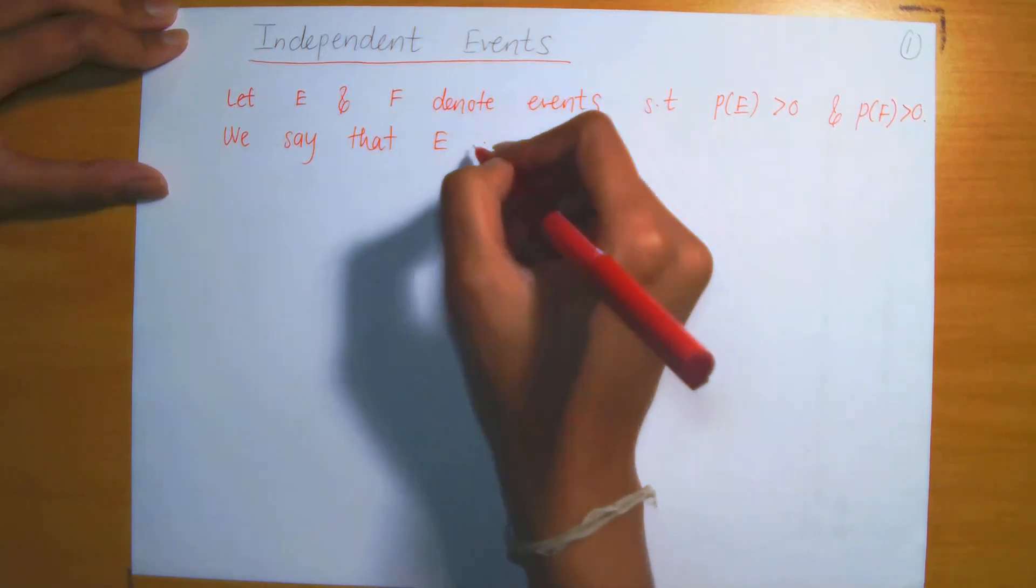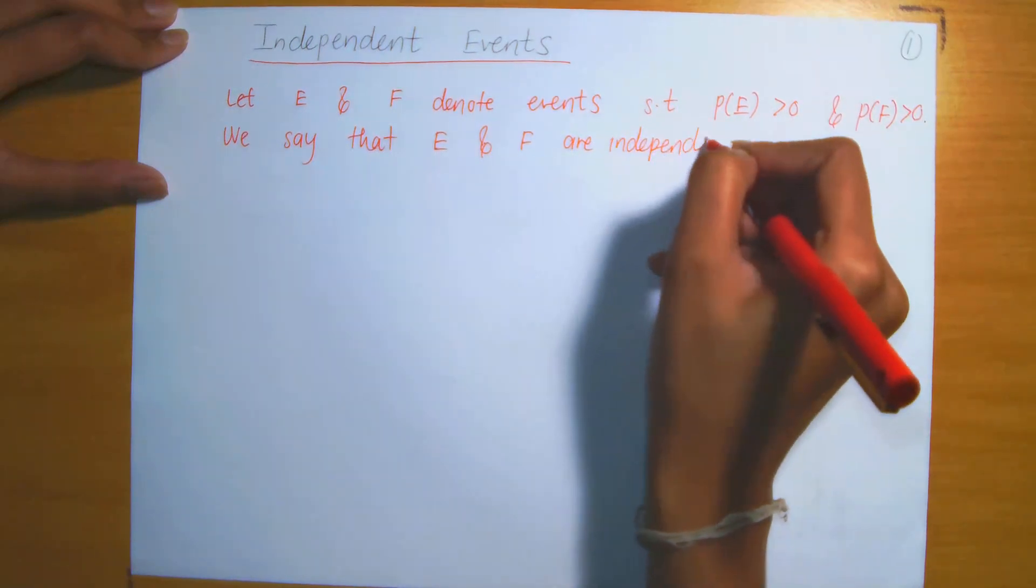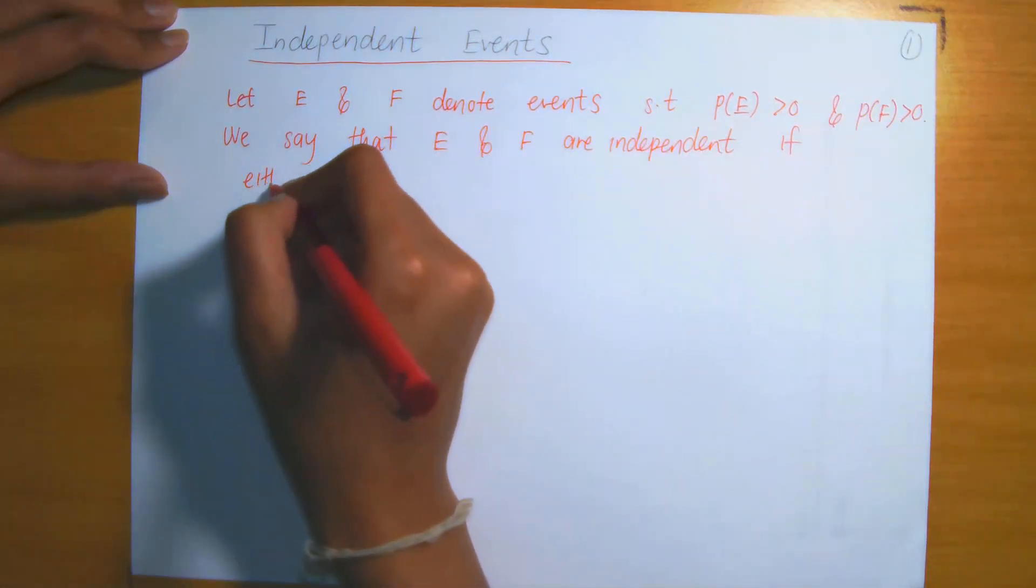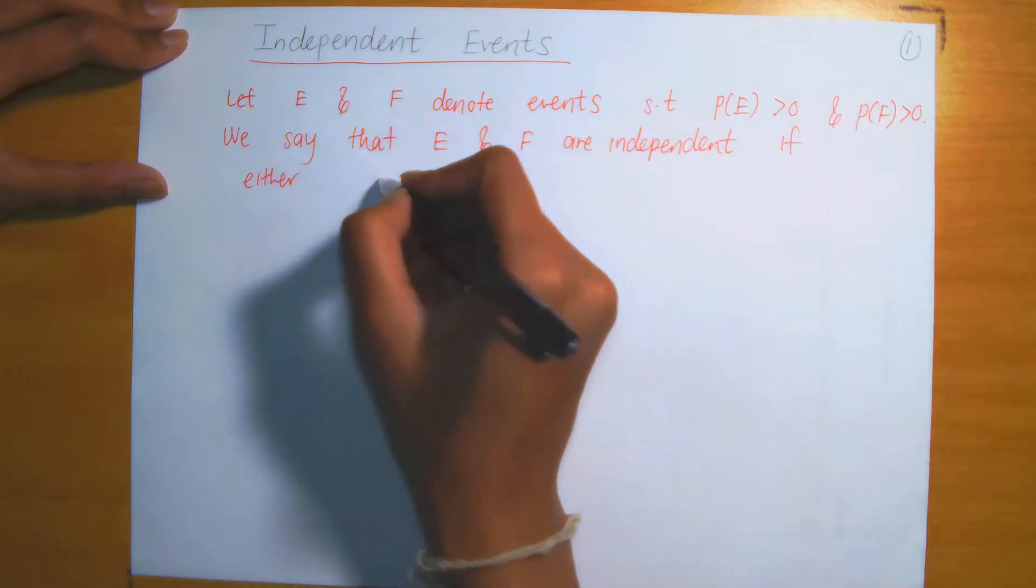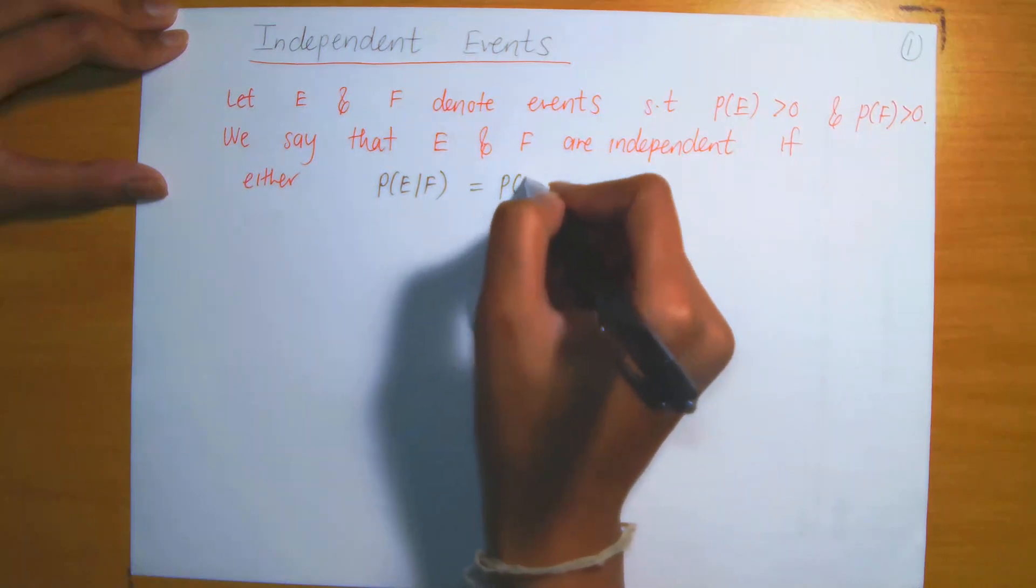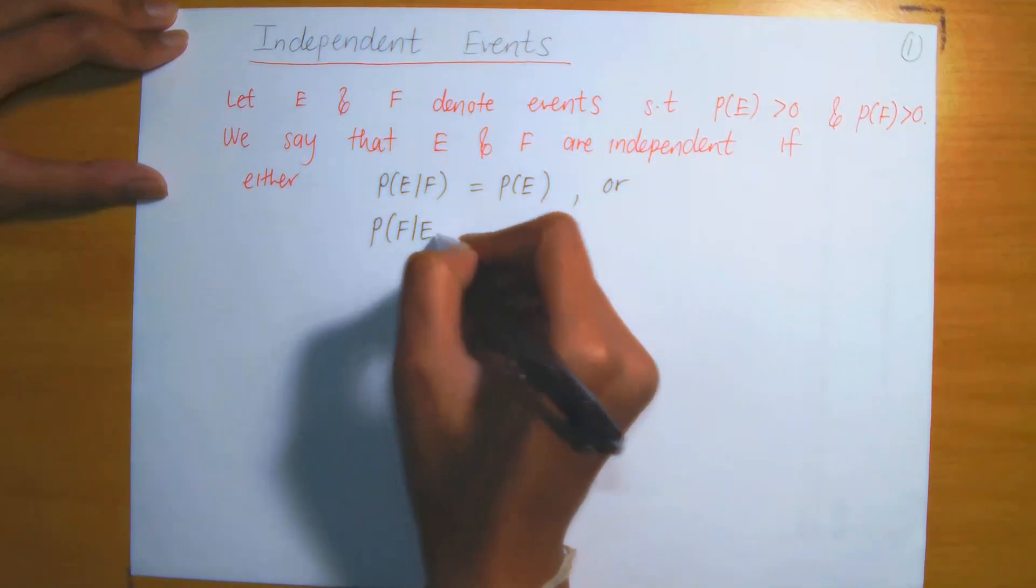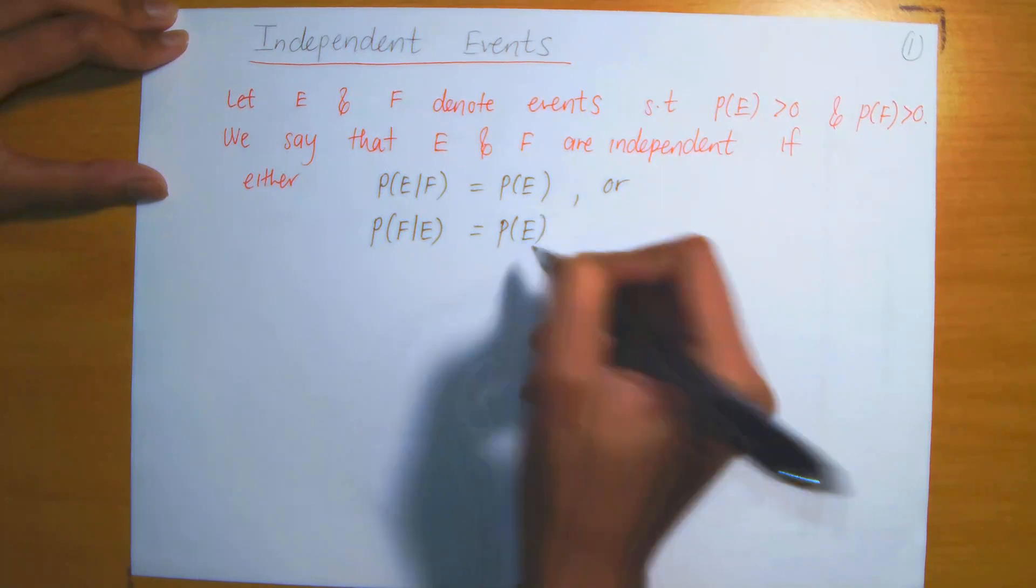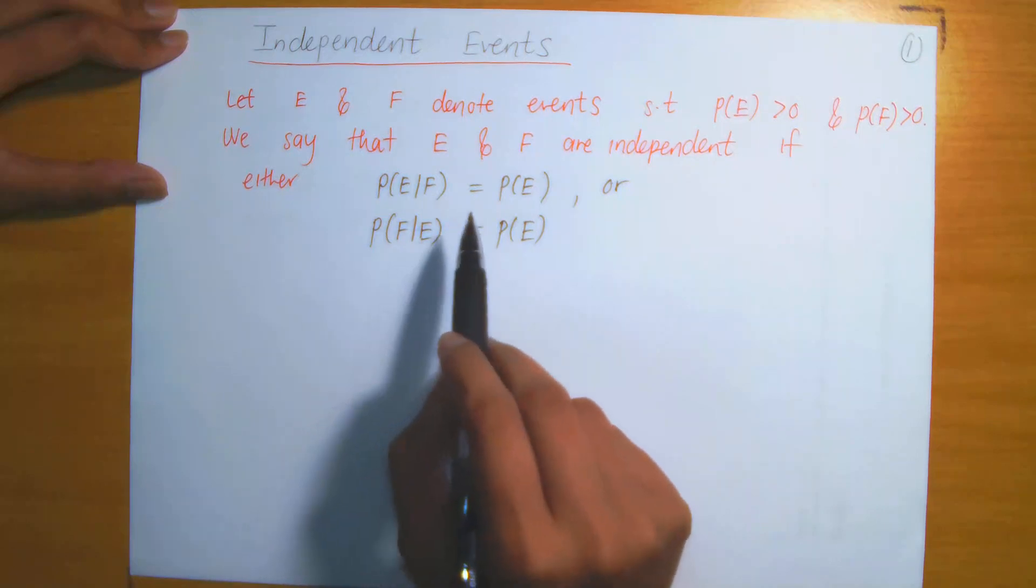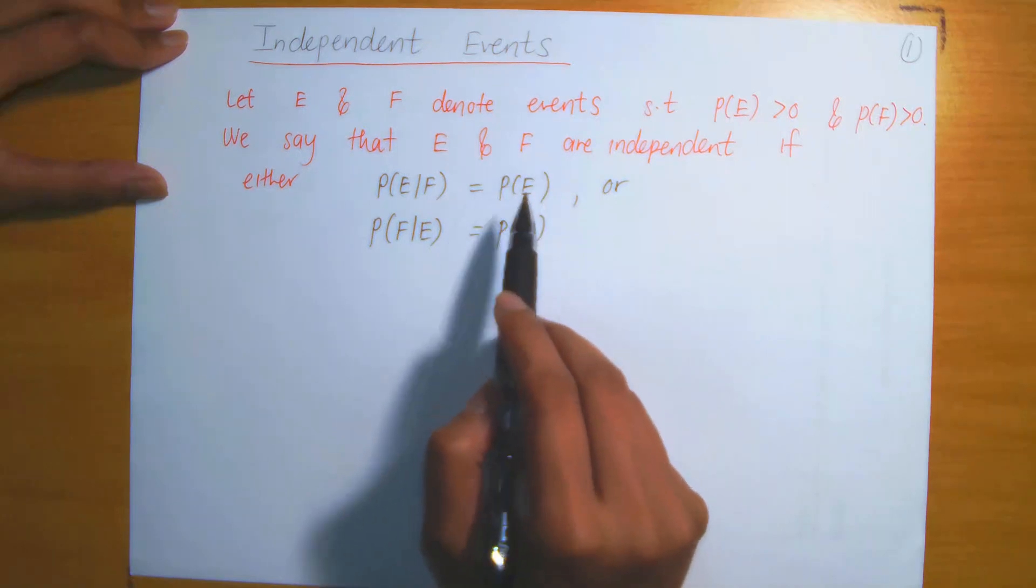We then say that these events E and F are independent if one of two conditions are satisfied. Either the probability of E given that F has occurred equals the probability of E, or if the probability of F given that E has occurred is equal to the probability of F. We have now defined the independence of two events based on conditional probability. Here we're saying that the conditional probability of E given F must be equal to the probability of E occurring.